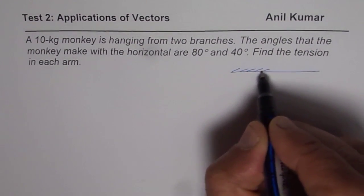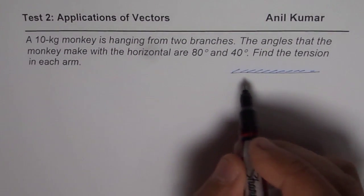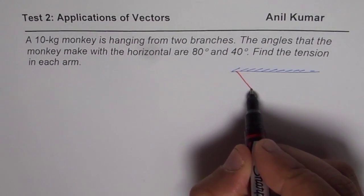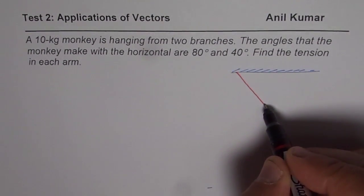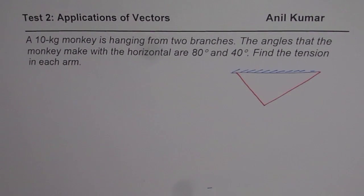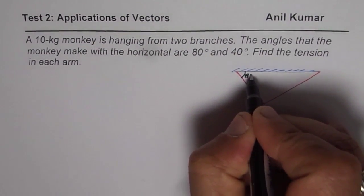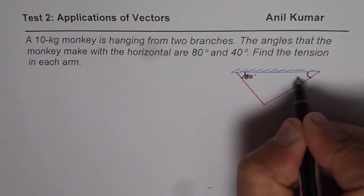Let us say this is the bar from which the monkey is hanging and let us say that the two arms are making the angle 80, kind of like this. So these are the two arms. And they are making an angle of 80 degrees and 40 degrees over the horizontal. So that means 80 degrees here and 40 degrees.